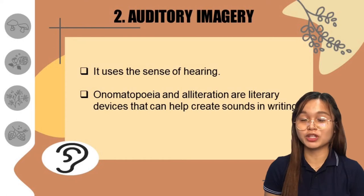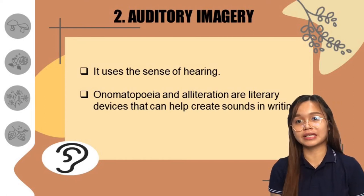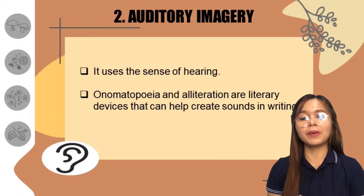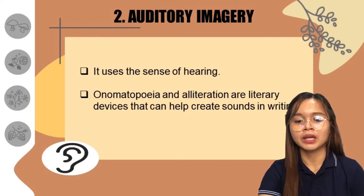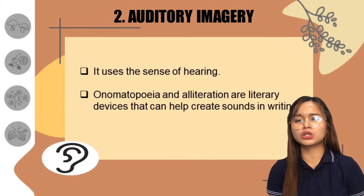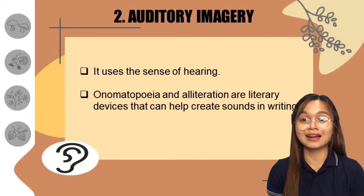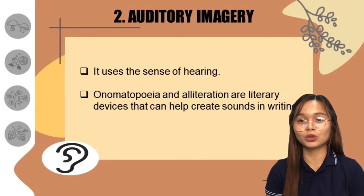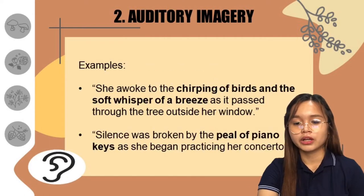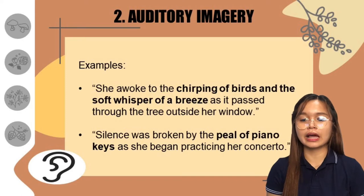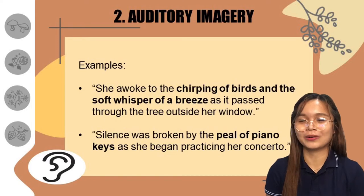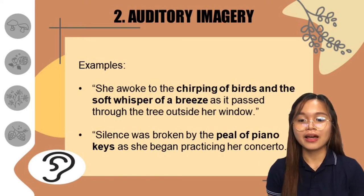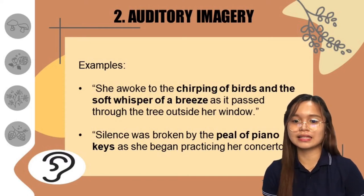Next, we have auditory imagery. Obviously, it uses our sense of hearing for us to understand the text. Onomatopoeia and alliteration are literary devices that can help us create sound in writing — that's a tip. Any noise, enjoyable sounds, or even the lack of noise — the peaceful calm, the eerie silence — are all part of auditory imagery. For example: 'She awoke to the chirping of birds and the soft whisper of a breeze as it passed through the tree outside her window.' Because of the words chirping of birds, that creates a sound we can visualize from the text — that makes the sentence auditory imagery.